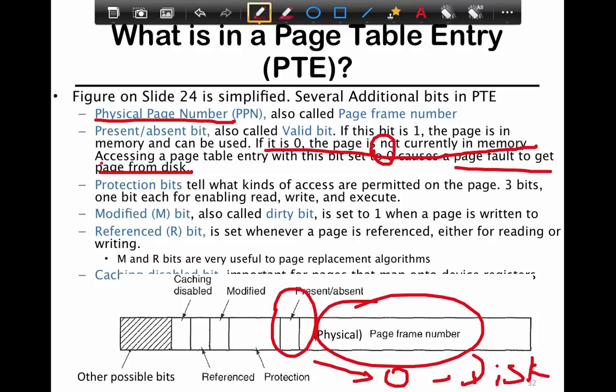Protection bits tell you what kind of access permission you want on the page. You have three bits - one bit each for read, write, and execute. You could have more detailed information depending on the operating system.